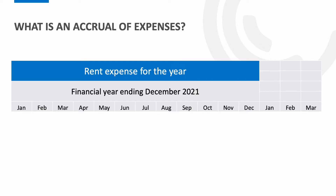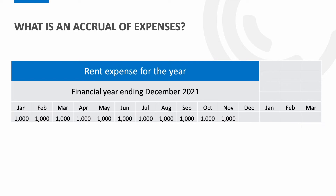An accrued expense occurs when the business has received goods or services before the end of the period but hasn't yet been invoiced by the supplier. Take a look at the example on screen. This business has paid rent of £1,000 per month from January through to November. Their financial year runs from January through to the end of December. At the end of December they haven't received the invoice for the month's rent. When preparing the accounts they would need to accrue — that is, add in the December amount — because they've had the service; in this case they've occupied the building during December.